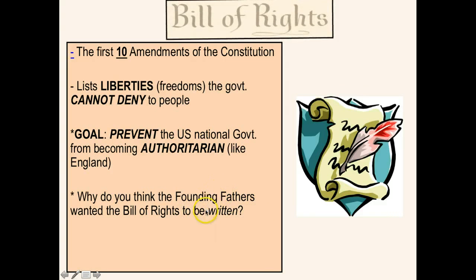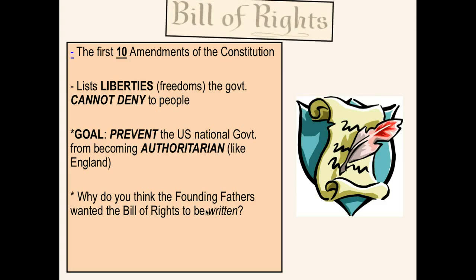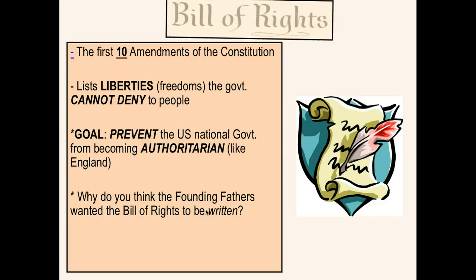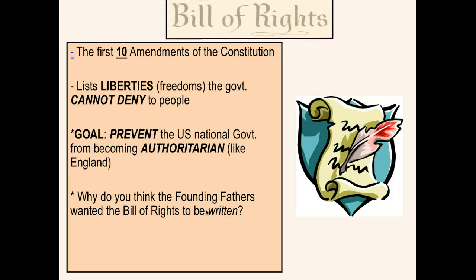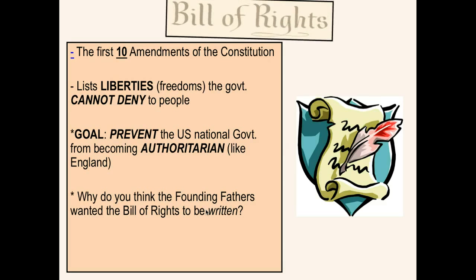Why do you think the Founding Fathers wanted the Bill of Rights to be written down? Think about that for a few seconds. If you write something down versus just saying it out loud, what does that tell you about the importance of the information? What does it tell you about how this information wants to be remembered? The Bill of Rights was written down because when you write something down, it usually signifies that this is really important. I'm taking the time to write it down and I want future generations to see this, to read this — not to guess or assume that people have these certain freedoms.